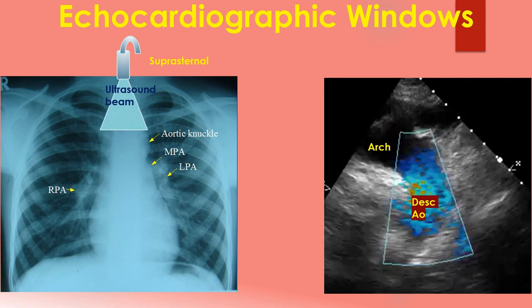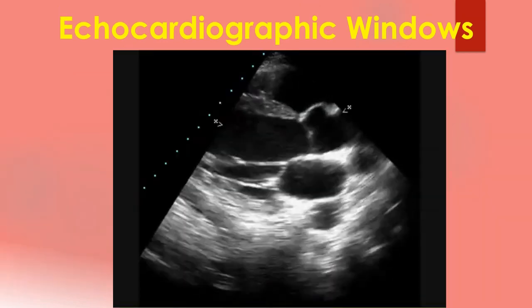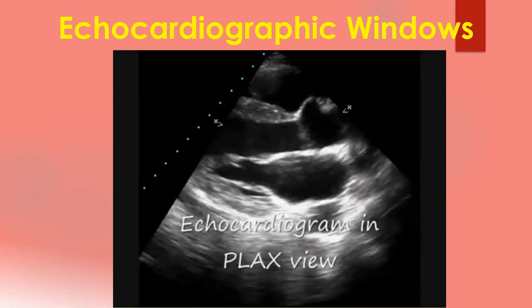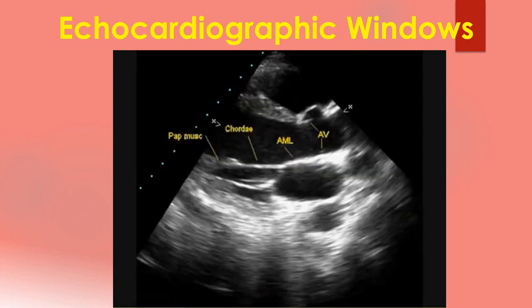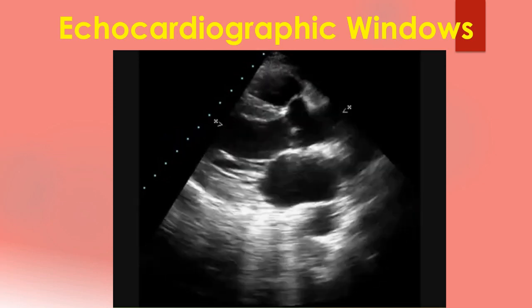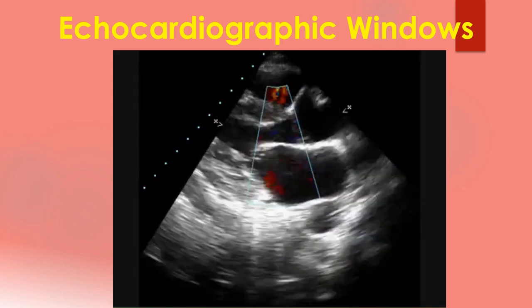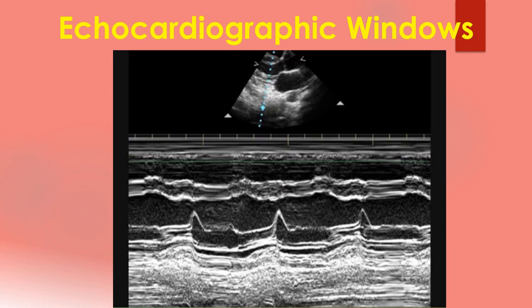Apart from these standard views, other modified views may also be used in certain circumstances. A right parasternal view may be used when the heart is enlarged to assess the tricuspid regurgitation jet. A dilated ascending aorta will also be visible in a right parasternal view. An annotated video of a normal colour Doppler echocardiogram illustrating various views and an M-mode tracing is shown here, beginning with the parasternal long axis view followed by colour Doppler and M-mode, then the parasternal short axis view, apical 4-chamber view and suprasternal view.